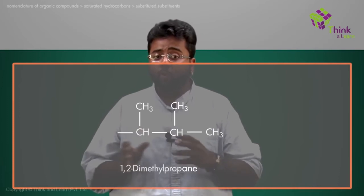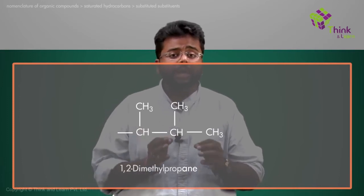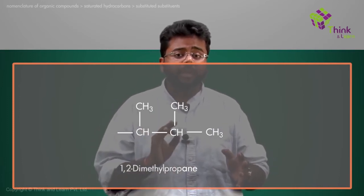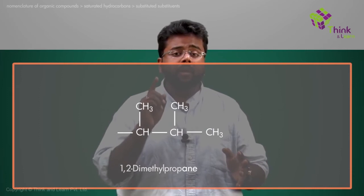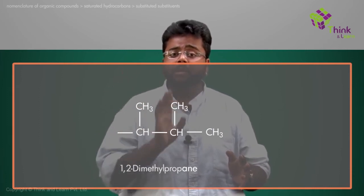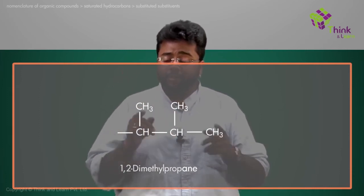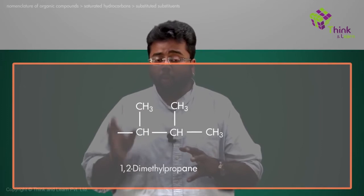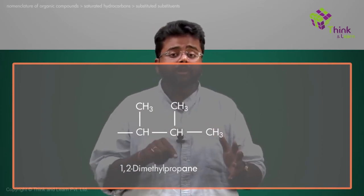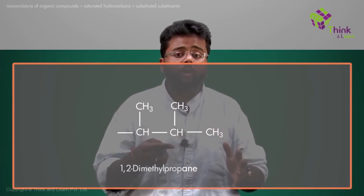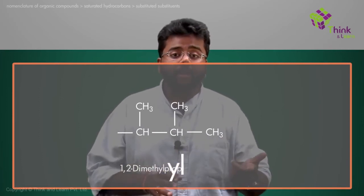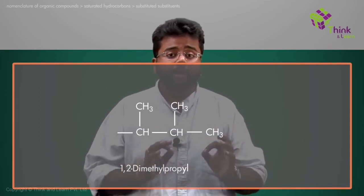So the name becomes 1,2-dimethylpropane. And as a substituent is named — recall that methane became methyl when it was a substituent — similarly, 1,2-dimethylpropane, because it is a substituent, will now be called 1,2-dimethylpropyl and not propane.